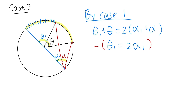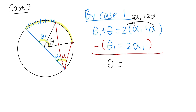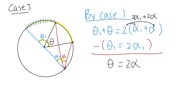Now subtract the second equation from the first: theta 1 minus theta 1 is zero on the left, leaving just theta. On the right, 2 alpha 1 minus 2 alpha 1 cancels, leaving 2 alpha. So once again, theta equals 2 alpha. All three cases are proven, and we are done.